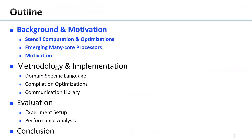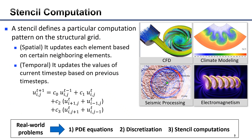First of all, I will give a brief introduction about stencils and emerging many-core processors. Stencil computation is an important building block of modern scientific applications. A stencil defines a particular computation pattern on a structural grid. As for the spatial dimension, it updates each element on a grid based on a subset of neighboring elements. As for the temporal dimension, it updates the values of the current time step based on previous time steps.